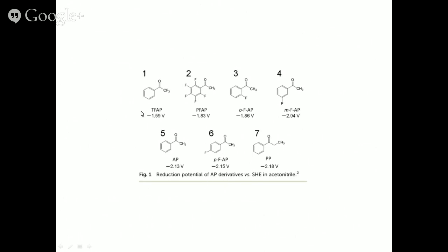There are varieties of acetophenones and substituted acetophenones whose redox potentials are given, measured against a saturated hydrogen electrode in acetonitrile medium. These redox potentials are favorable, and therefore these substrates can undergo reduction to give rise to the corresponding alcohol from the ketone.